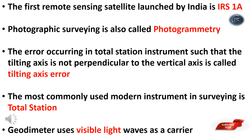The first remote sensing satellite was launched, and aerial photographic surveying is also called photogrammetry. The error occurring in the total station instrument such that the tilting axis is not perpendicular to the vertical axis is called tilting axis error.